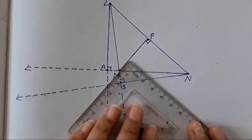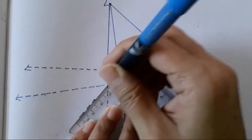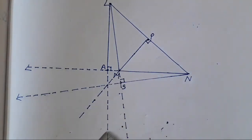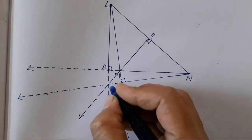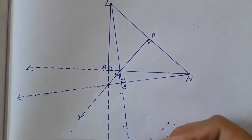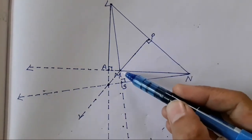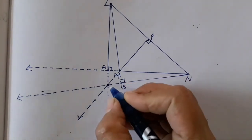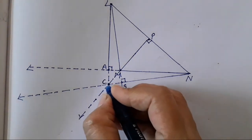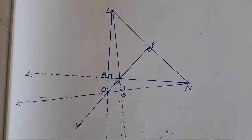Now let's extend this altitude line in dotted pattern so it will be visible. We have got our orthocenter. This was your altitude LA and its extension, altitude NS and its extension, and altitude PM and its extension. All three meet at the point O, which has already been given in the question - we have to mark it as O. So your fourth question is complete.